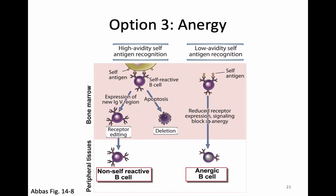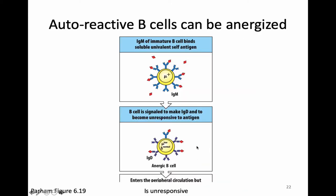This led to the discovery of the third mechanism of getting rid of self-reactive B cells, known as anergy. When a cell sees soluble self-antigen and gets a weaker signal, that cell is induced to go into a state known as anergy. It does leave the bone marrow, but anergic cells become unable to respond — we get a cell that is completely unresponsive to antigen in the periphery. It's present but unable to make a response. This anergic or anergized cell is the outcome of the third mechanism, and it tends to happen to B cells with the weakest interaction with self-antigen.